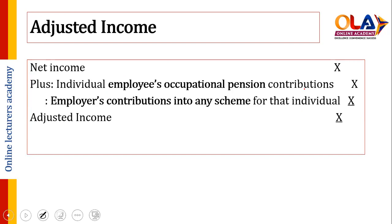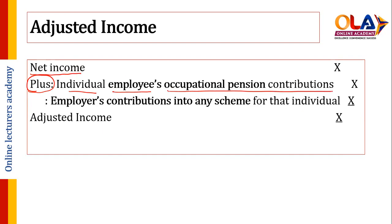The next thing you have to work out is adjusted income. The same definition of net income applies, but then you have to add — rather than deduct — the individual's employee occupational pension contribution, plus the employer's pension scheme contribution. Now after identification of this adjusted income, if adjusted income is more than £240,000 then the reduction is to be calculated.